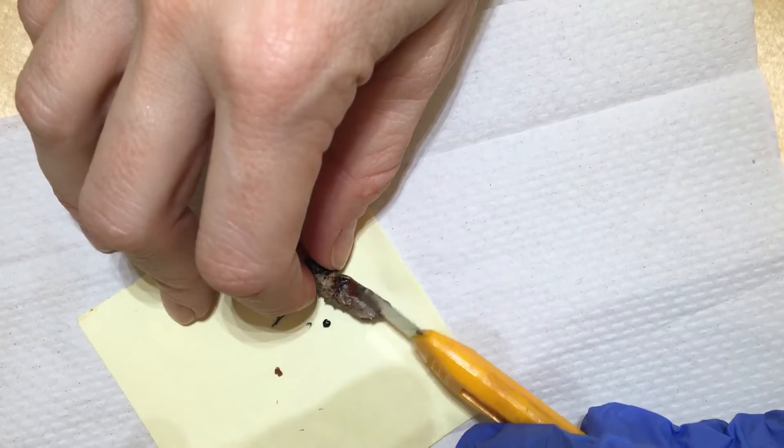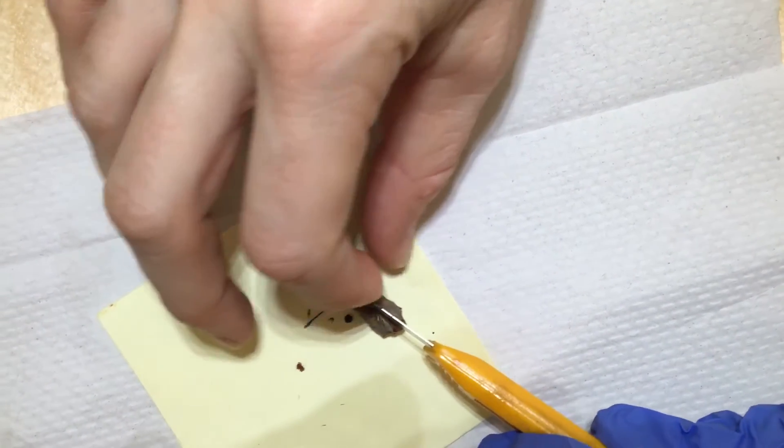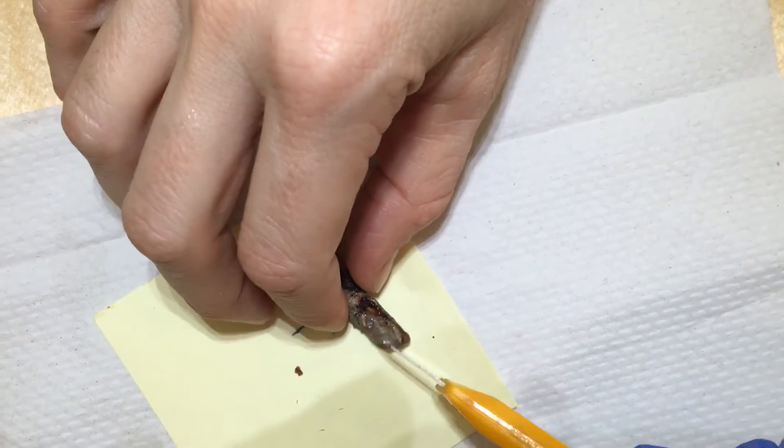She's being really delicate, she's trying just to cut open just the chrysalis part so that we can still take a look to see what's inside.